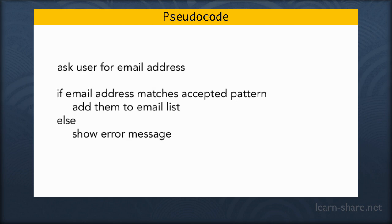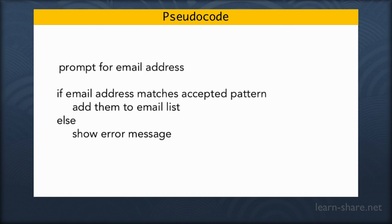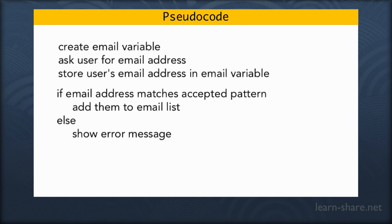Something like this — pseudocode doesn't have formal rules. Where I said 'ask user for email address,' I could have said 'get email address,' or 'prompt for email address,' or if I wanted to break it out, I could say: create email variable, ask user for email address, store user's email address in email variable. Or I could just say 'get email.'